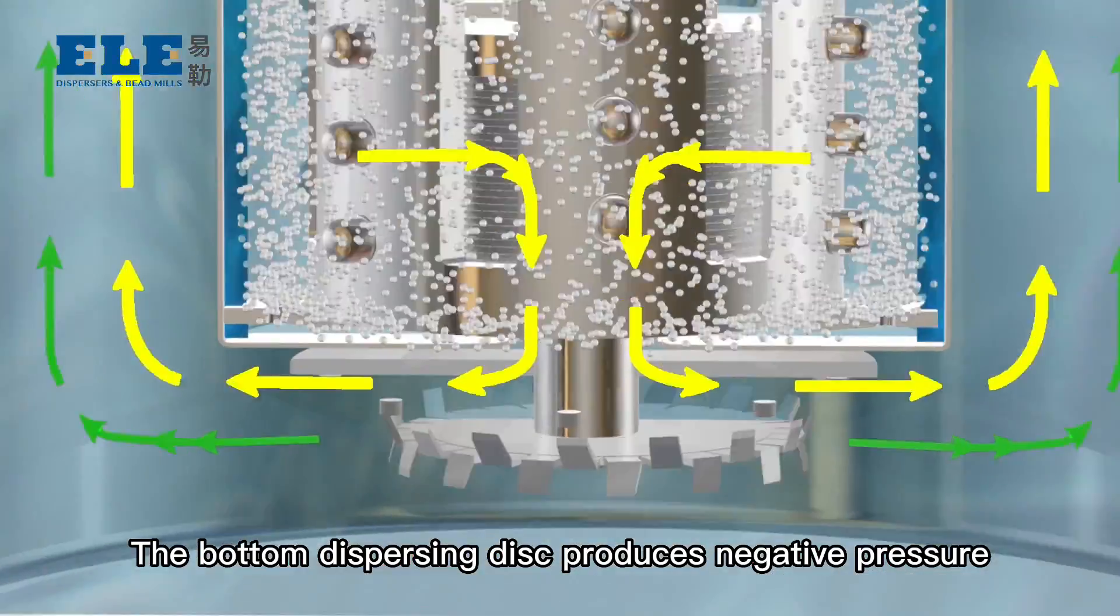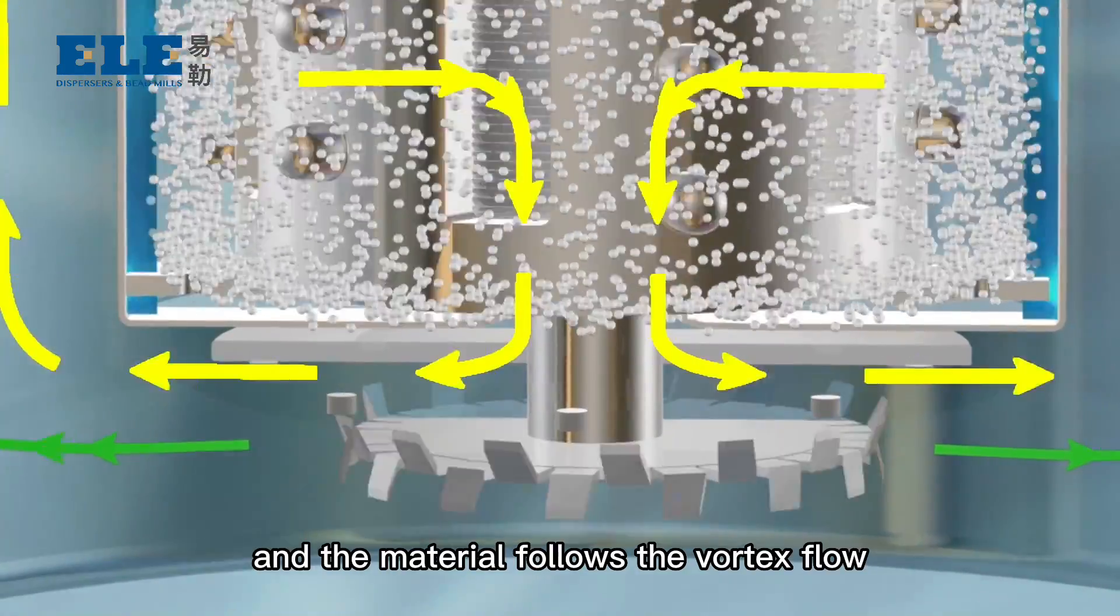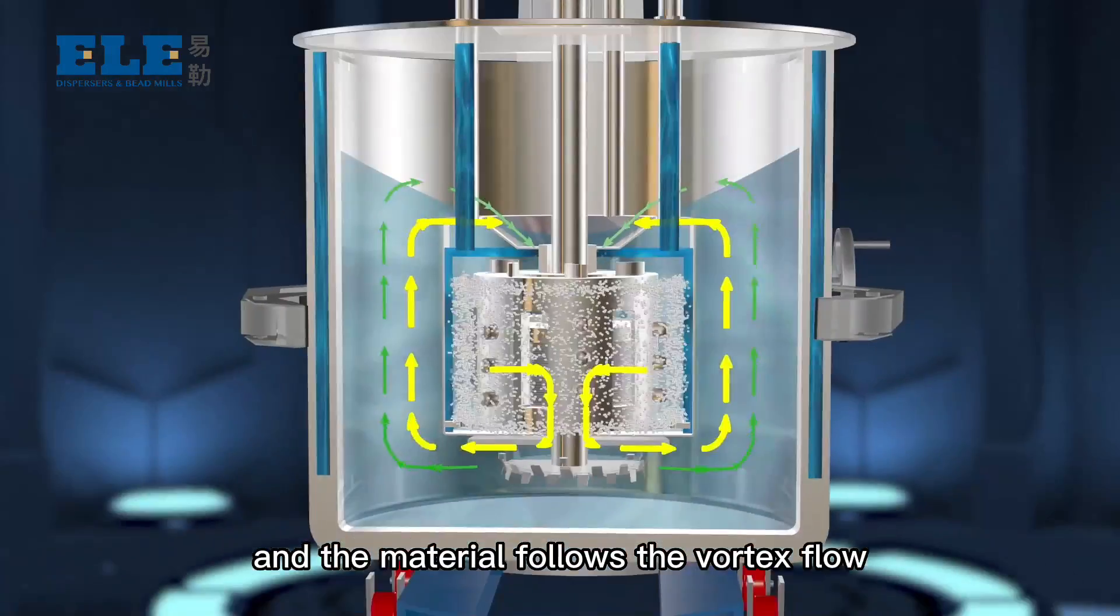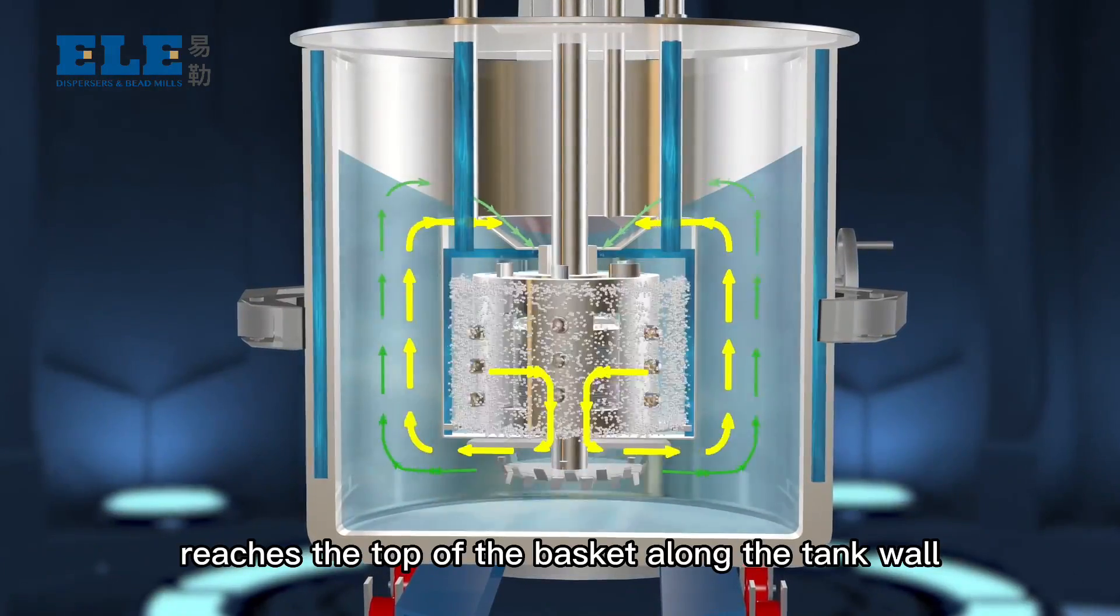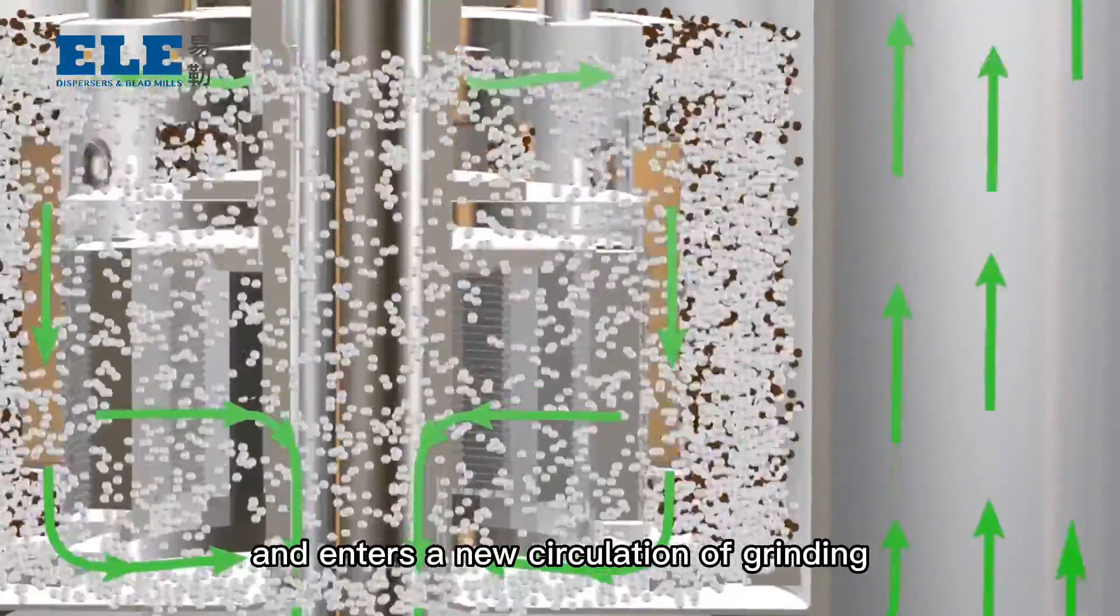The bottom dispersing disc produces negative pressure to push out the material, and the material follows the vortex flow, reaches the top of the basket along the tank wall, is sucked in by the impeller, and enters a new circulation of grinding.